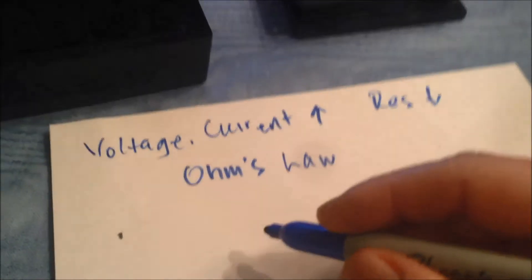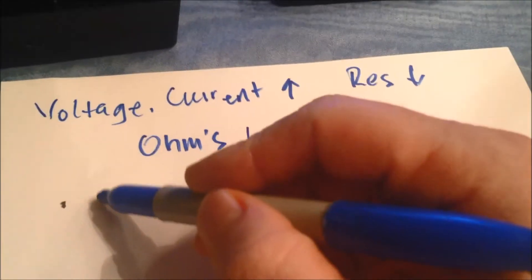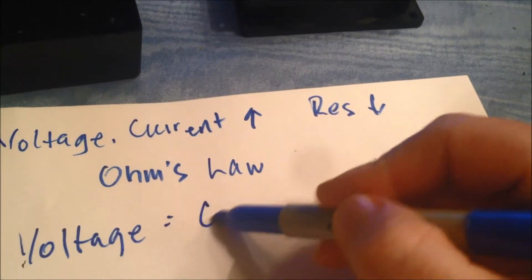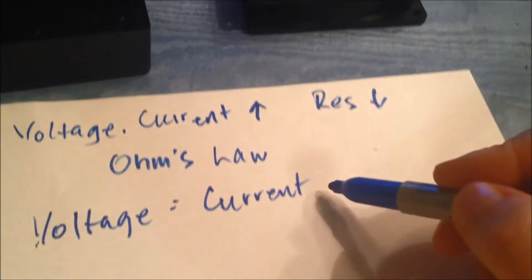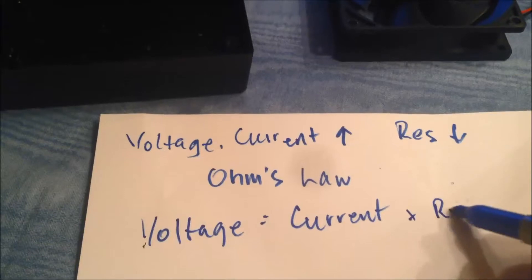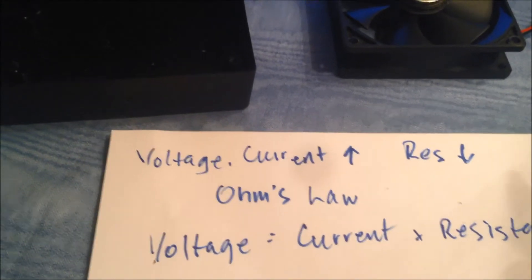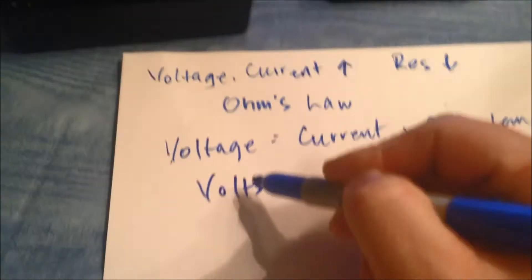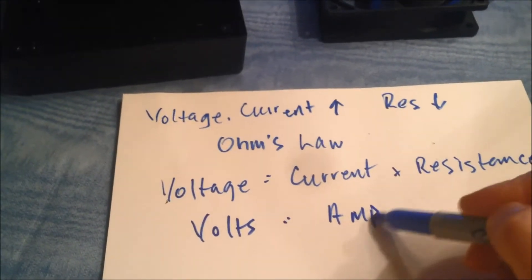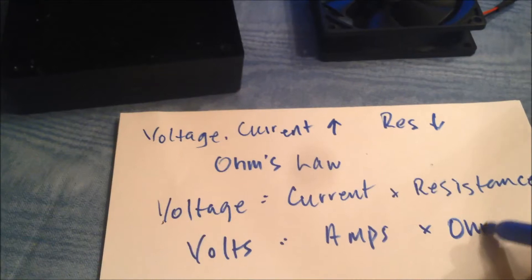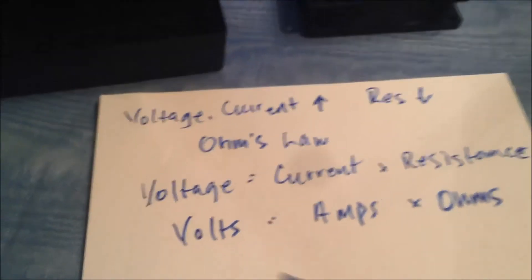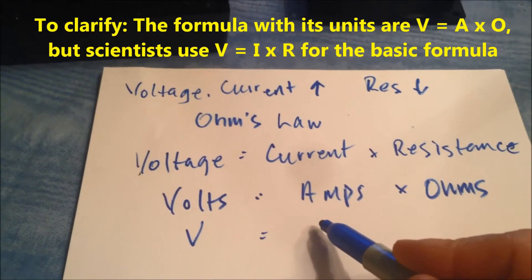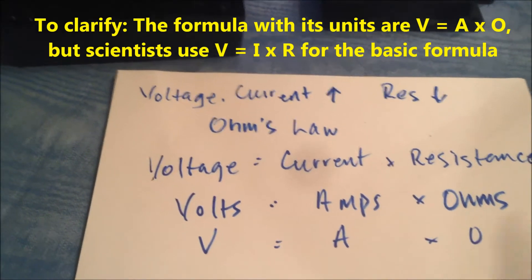So Ohm's Law is voltage equals current times resistance. Those are the variables in units. Voltage is measured in volts. Current is measured in amps. Resistance is measured in ohms. And we short form those with V. I'm going to use A, but it should be I in scientific notation. I'll say A to keep it simple times O. So voltage is always constant.